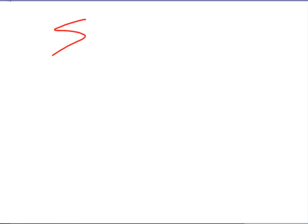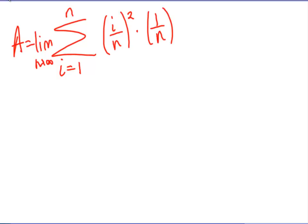I can say that the sum i goes from 1 to n, the area is supposed to be the limit as n goes to infinity. The sum i goes from 1 to n of the height, which was i over n squared, times the width, which was 1 over n. So if we can figure out that sigma right there and take the limit, we'll have the area.